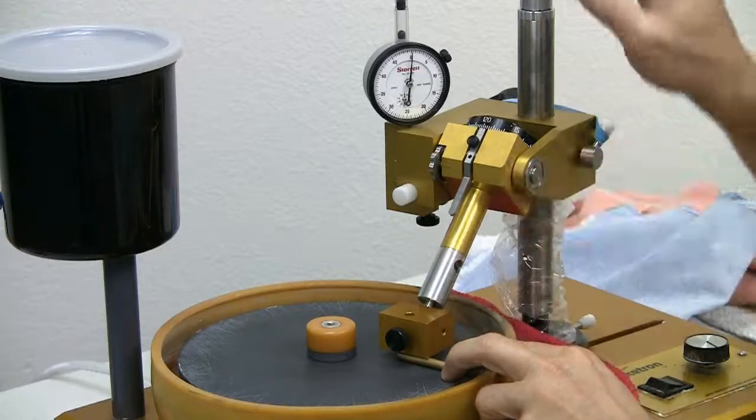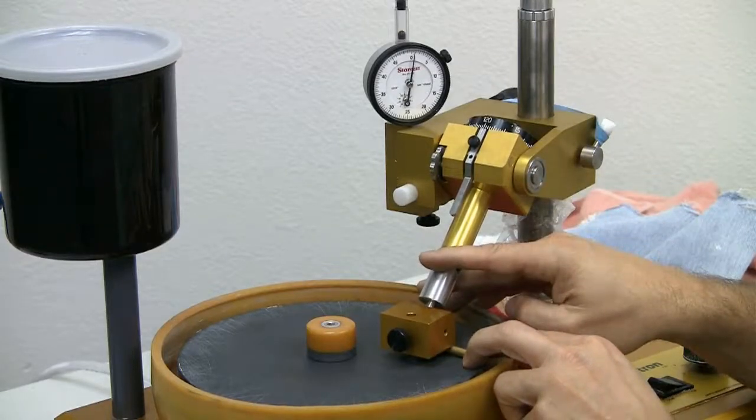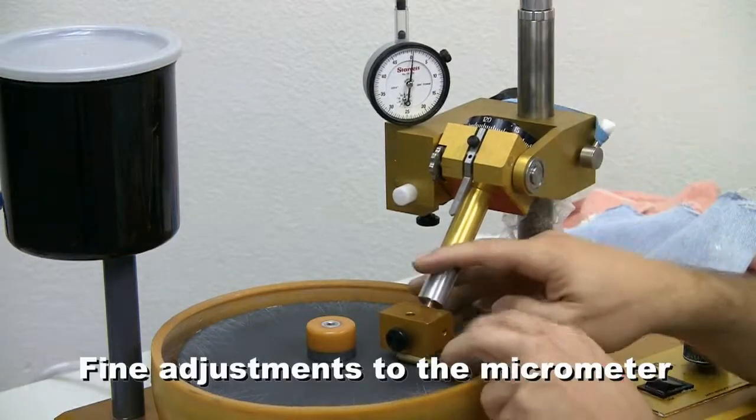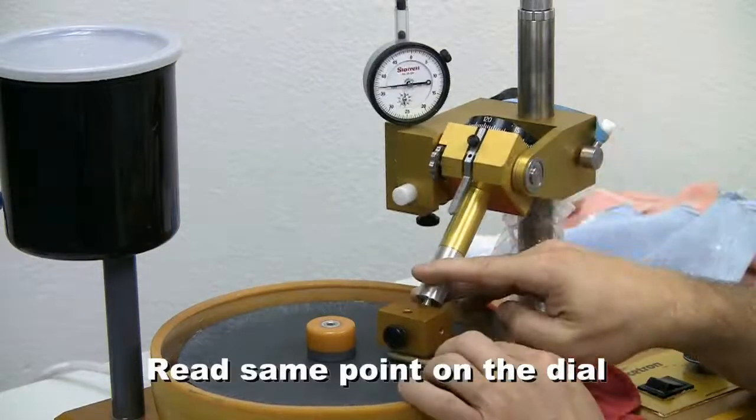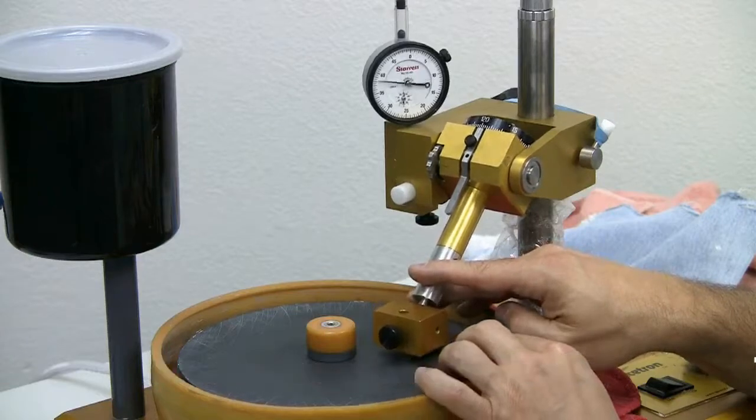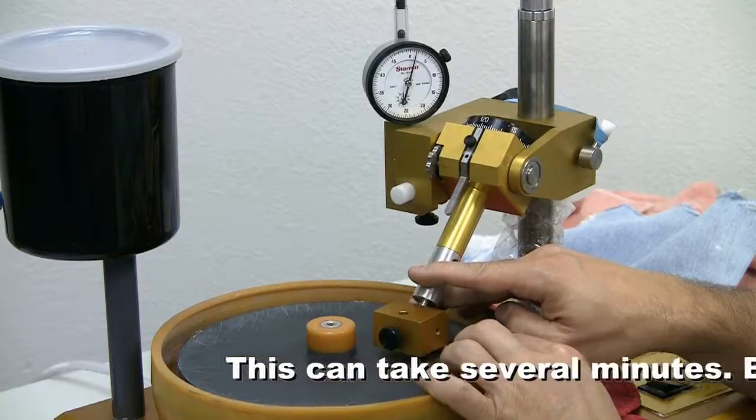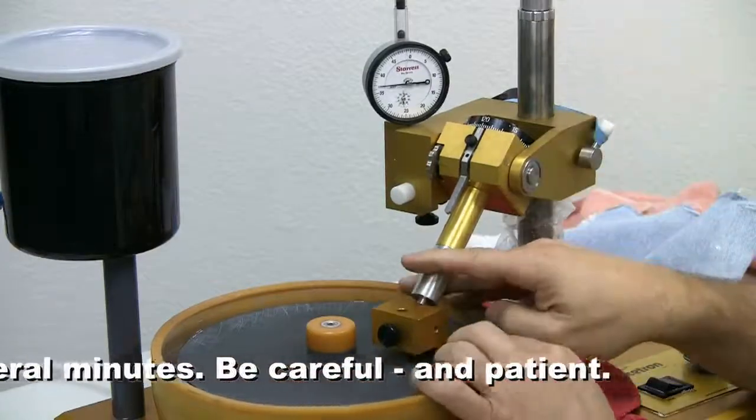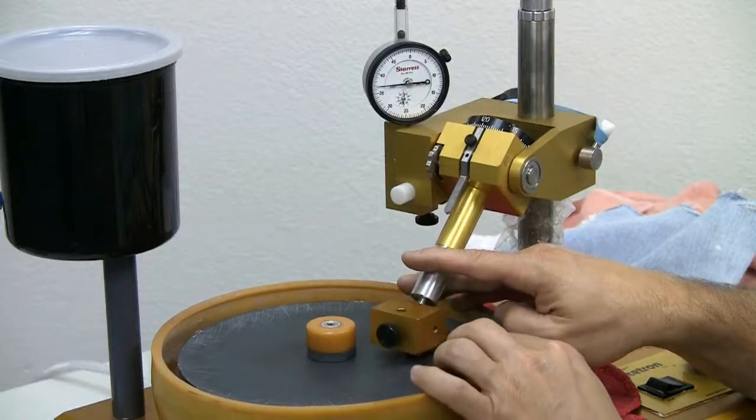We're going to move this back and forth. Make fine adjustments until it's exactly the same distance above the lap in both positions. There we go.